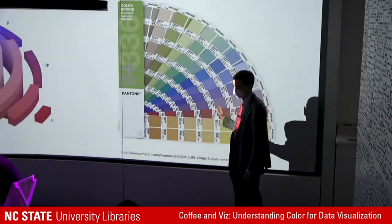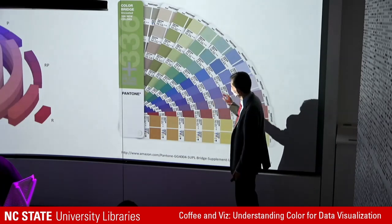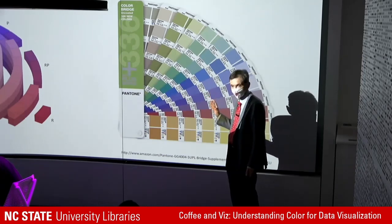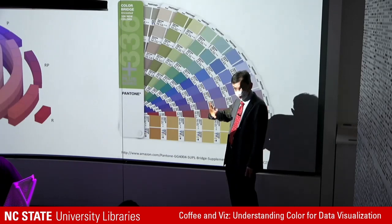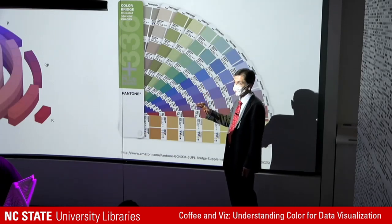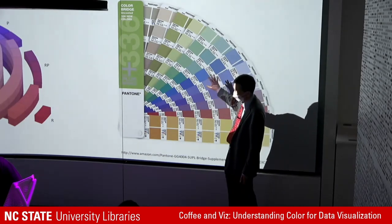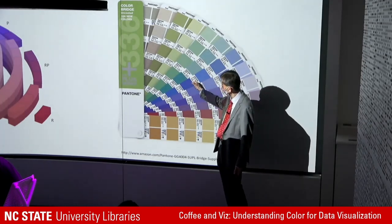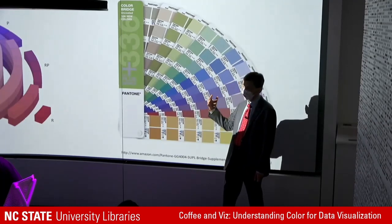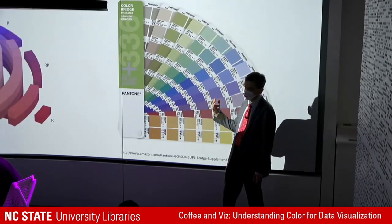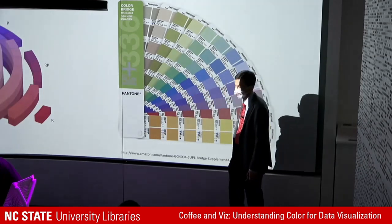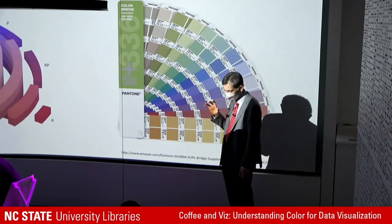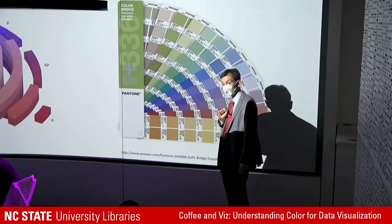Another color model is Pantone — anyone who does graphic design would recognize this. A main problem in graphic design is that when you design something on a monitor and print it, it never looks the same, because the gamuts of the two devices are different and they're calibrated differently. What Pantone does is provide compatible monitors and printers — so in a package like Photoshop you can specify colors using Pantone numbers, and because you're using pre-calibrated devices, it guarantees that what you see on the monitor is exactly what you get when you print it. That's critical for anyone doing graphic design or work where it's important that screen and print results match.